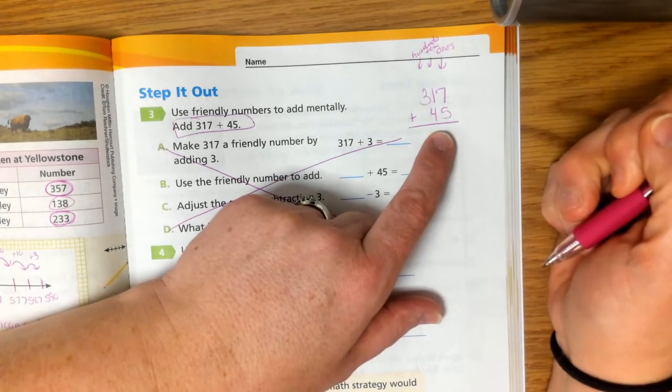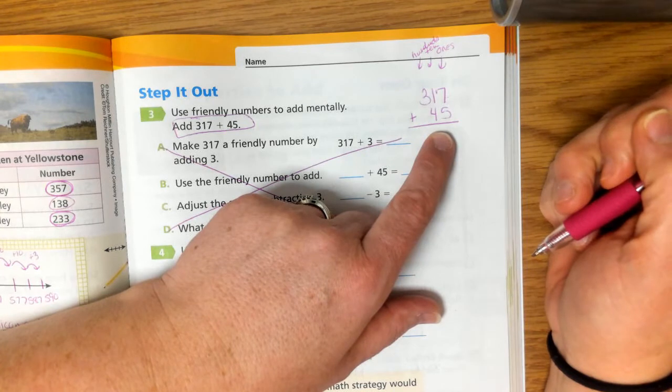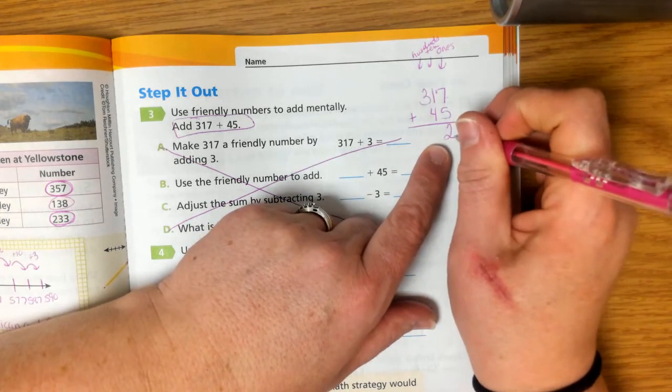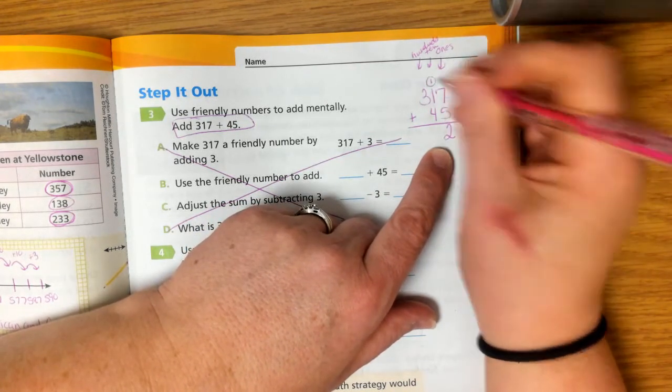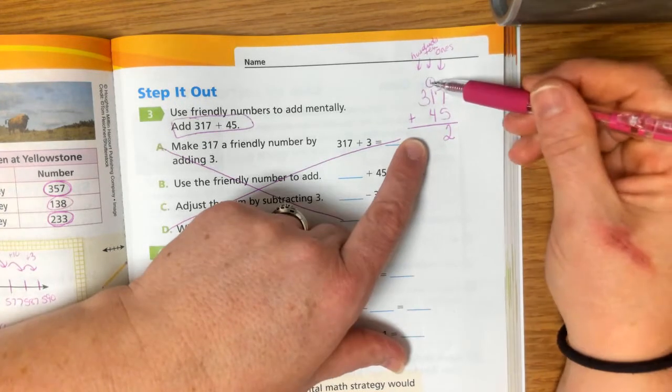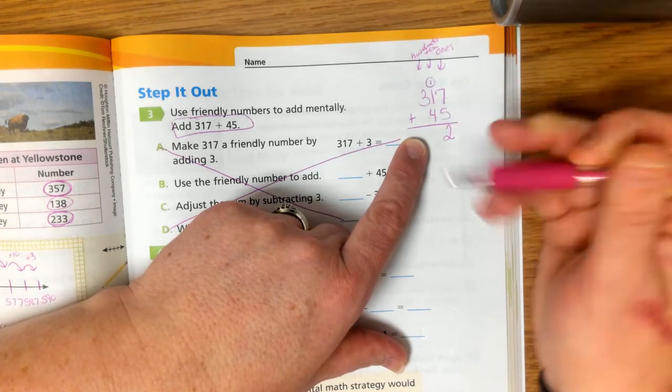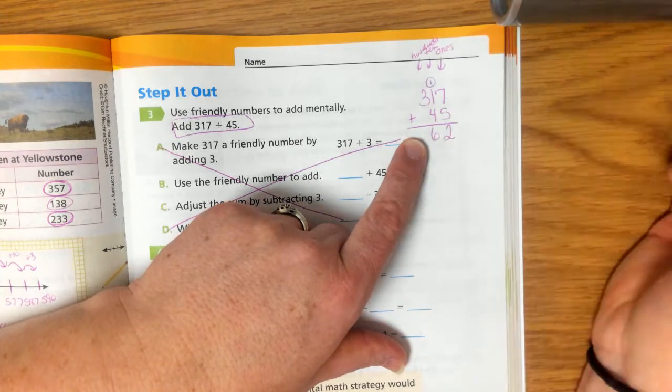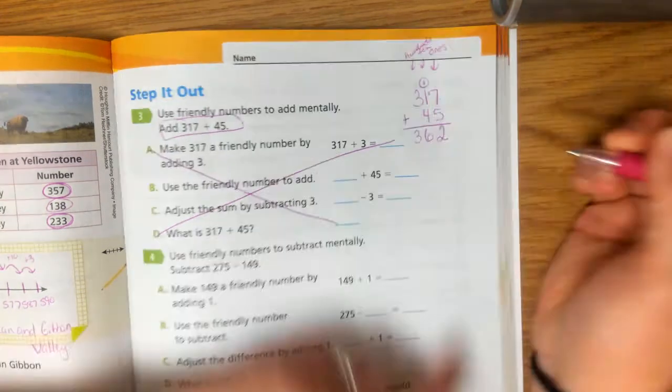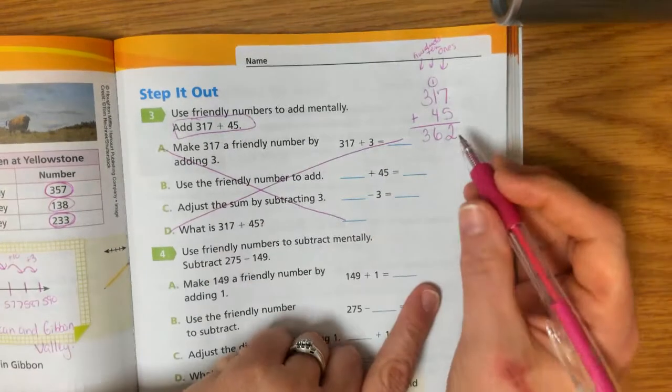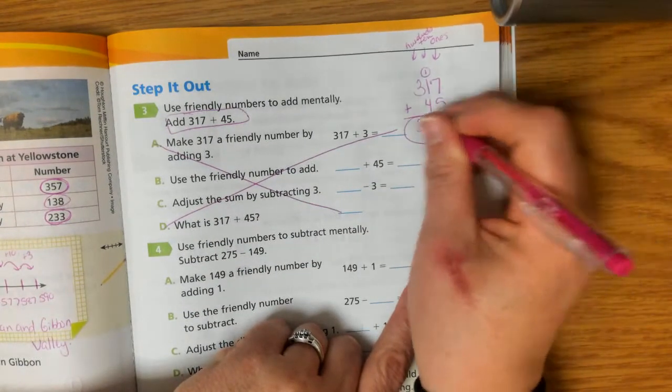So 7 plus 5 is 12. We put our 2, we regroup our 1. 1 plus 1 is 2 plus 4 is 6, and then 3. So our answer is 362.